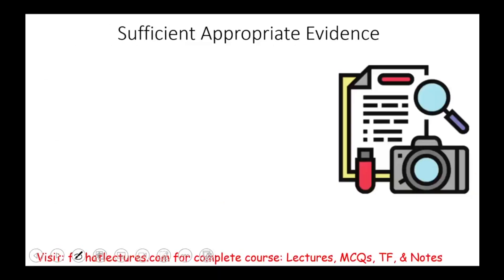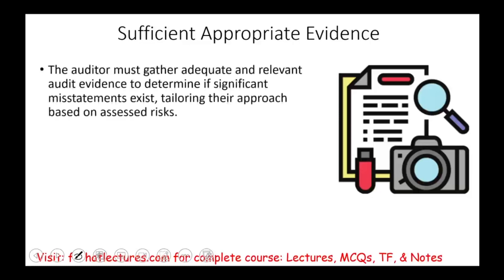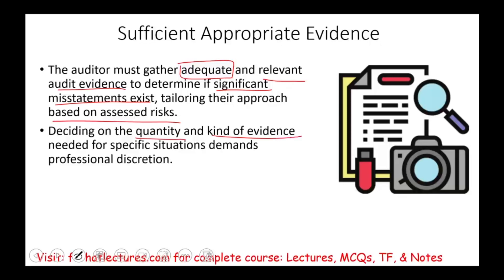The auditor will also have to collect sufficient appropriate evidence — adequate and relevant audit evidence good enough to make a decision on whether a significant misstatement exists. The auditor will tailor their approach based on the assessed risk, using professional discretion to determine what type and quantity of evidence is needed for a specific situation.